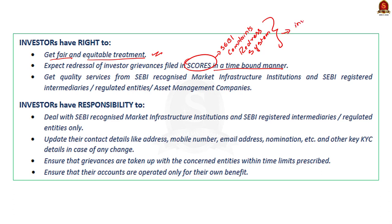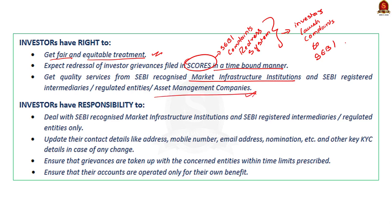Investors also have the right of getting quality services from SEBI-recognized market infrastructure institutions. Note that stock exchanges, depositories, and clearing corporations are collectively referred to as market infrastructure institutions of SEBI. Investors also have the right of getting quality services from SEBI-registered intermediaries, regulated entities, and asset management companies. Additionally, it is the responsibility of investors to ensure all grievances are taken up with concerned entities within prescribed time limits.